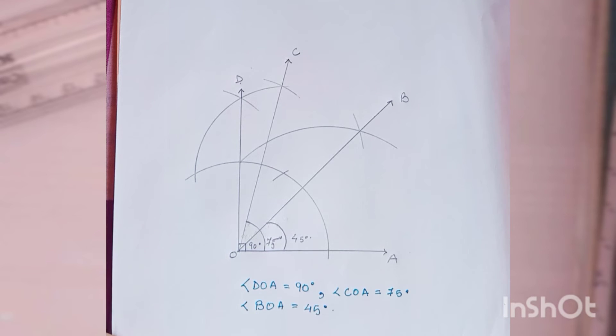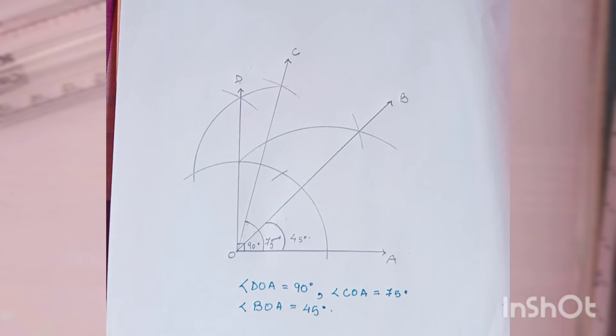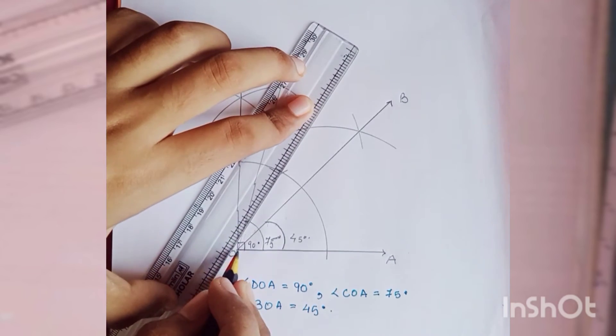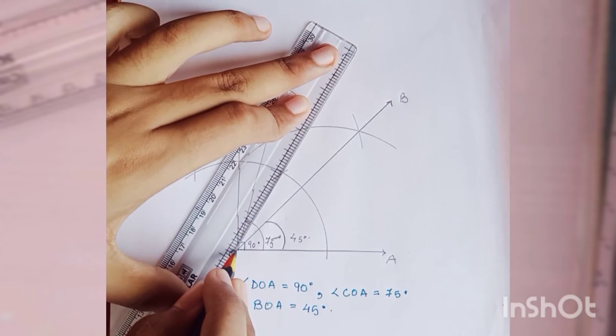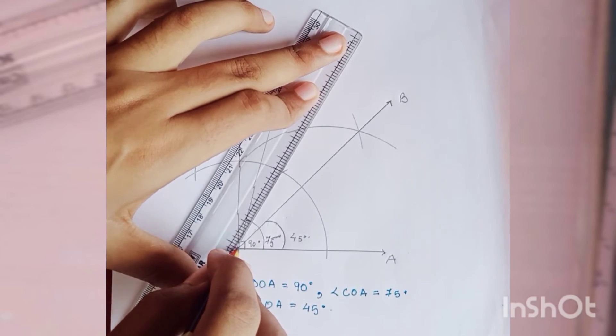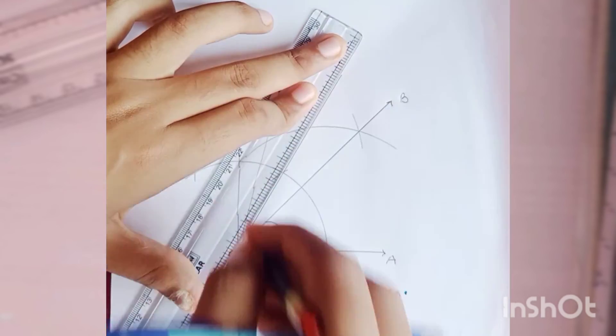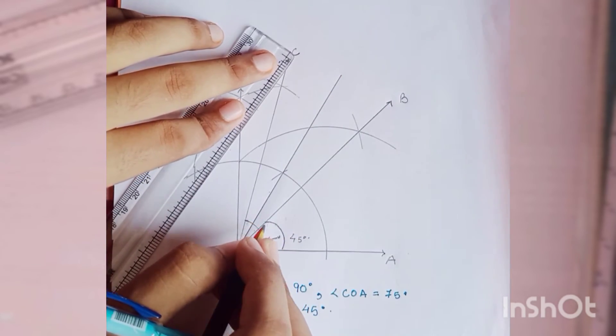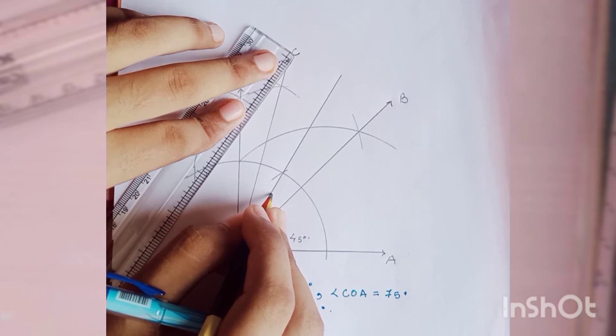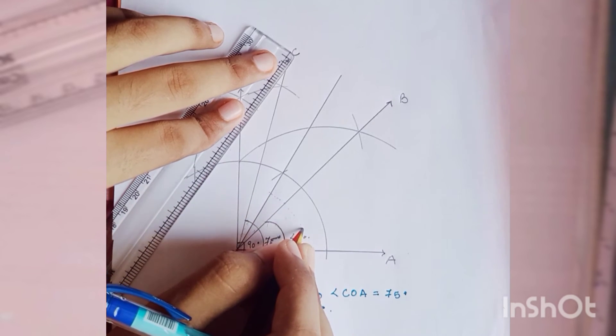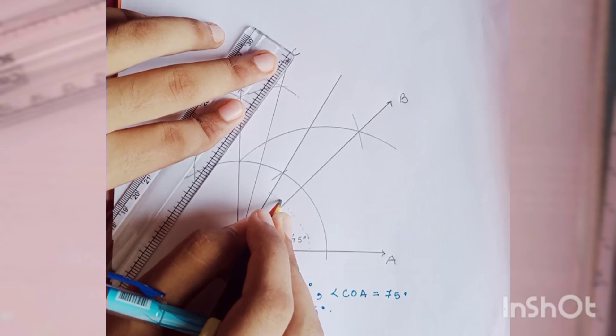So we have learned how to make 90 degrees, 75 degrees, and 45 degrees. 60 degrees is the same. This arc is called 60 degrees. So if you join this line like this, then it will become this whole thing. Yes, from here if you draw, this whole thing from here,